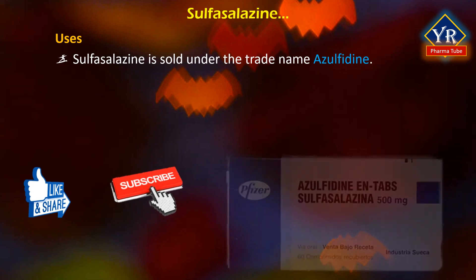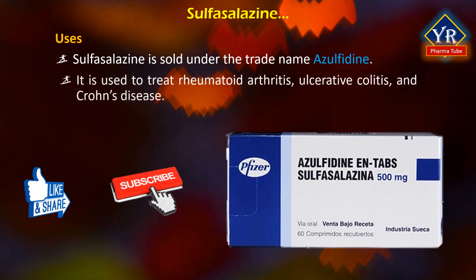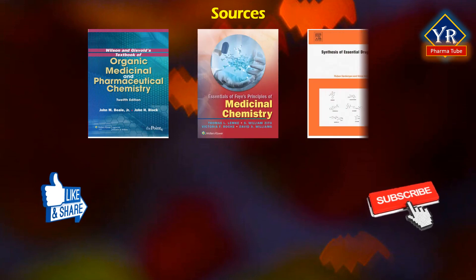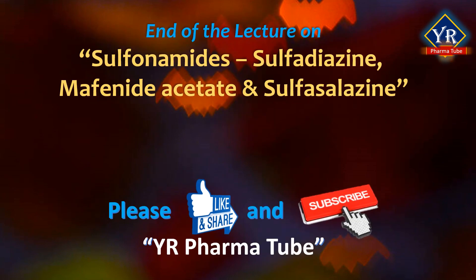Sulfasalazine is sold under the trade name Azulfidine. It is used in the treatment of inflammatory bowel disease including ulcerative colitis and Crohn's disease. It is considered as the first-line treatment in rheumatoid arthritis. It is taken by mouth. That's all in this video — the sulfonamide individual drugs sulfadiazine, mafenide acetate, and sulfasalazine.